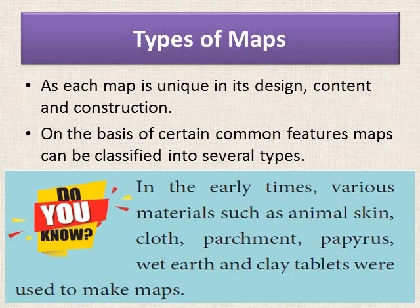Dear children, in the early times, various materials such as animal skin, cloth, parchment, papyrus, wet earth, and clay tablets were used to make maps. Earlier, maps were made on animal skin, cloth, parchment — a kind of paper — papyrus, which is a type of bark of a tree — wet mud, or even on clay tablets and clay slabs.